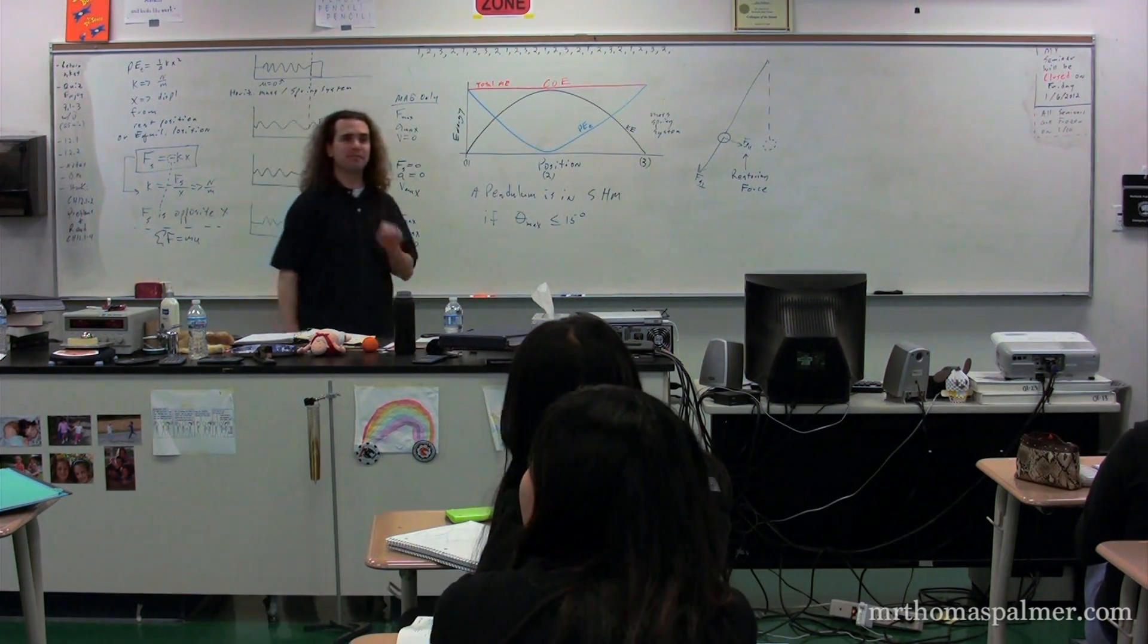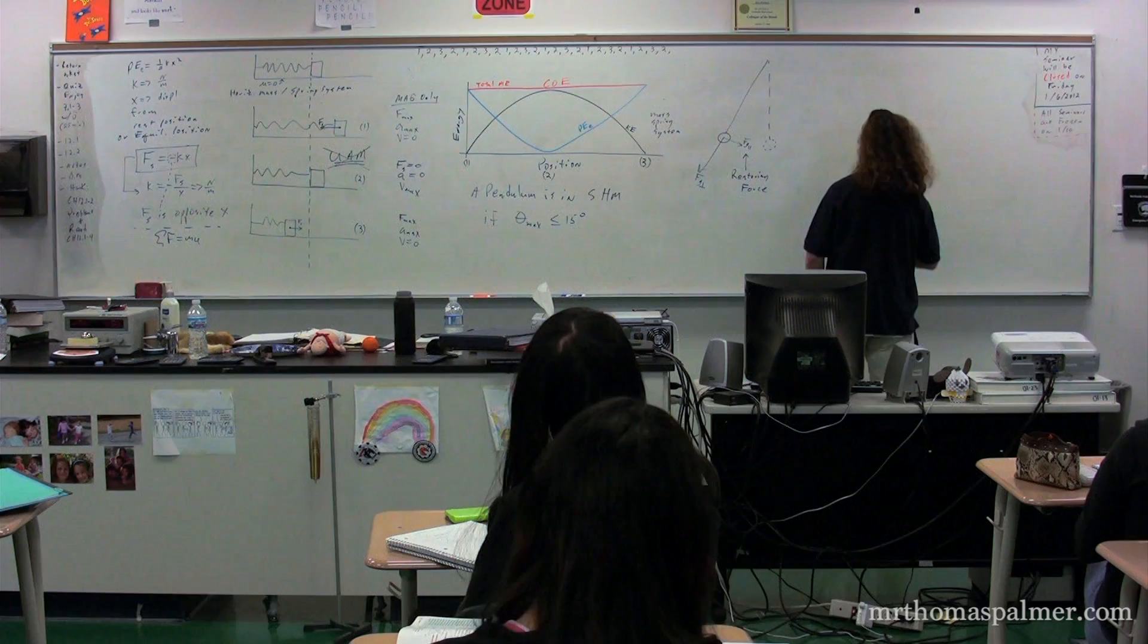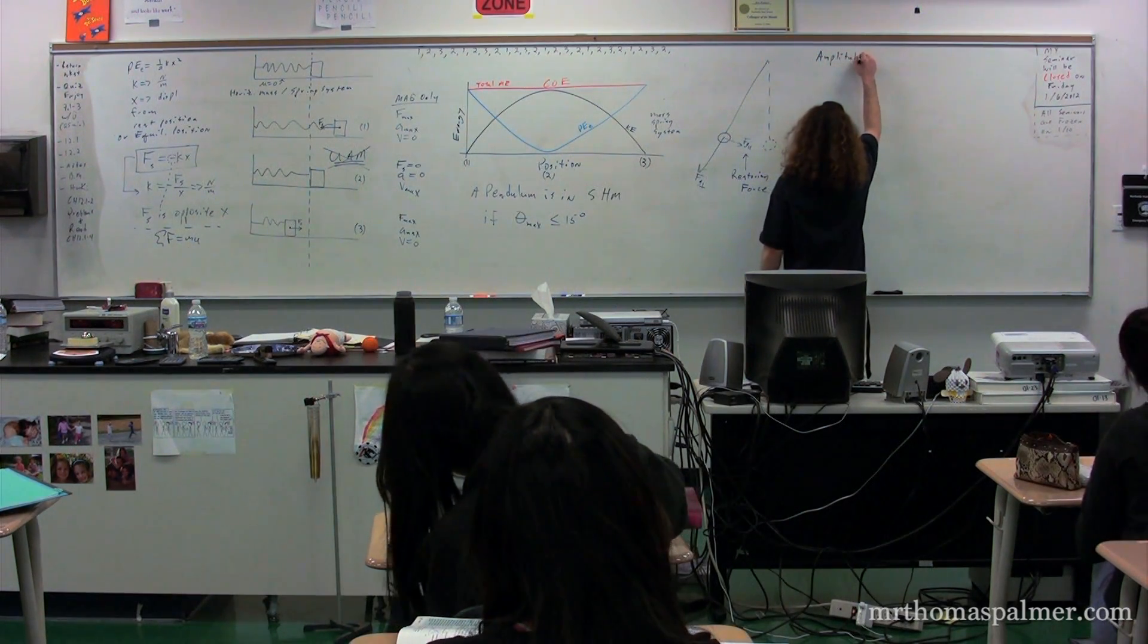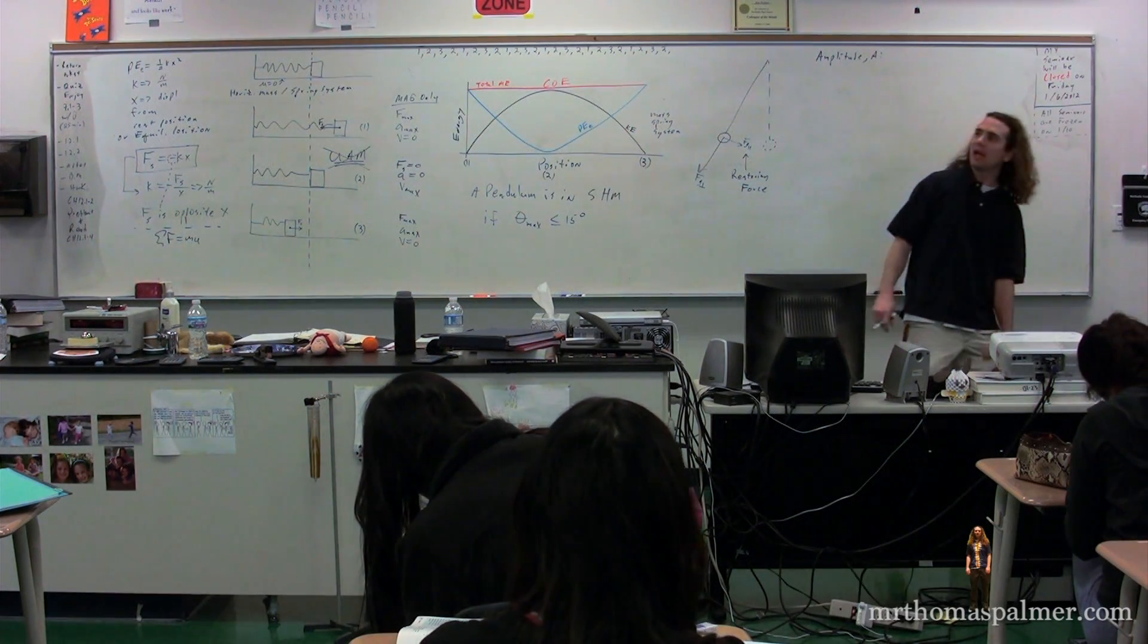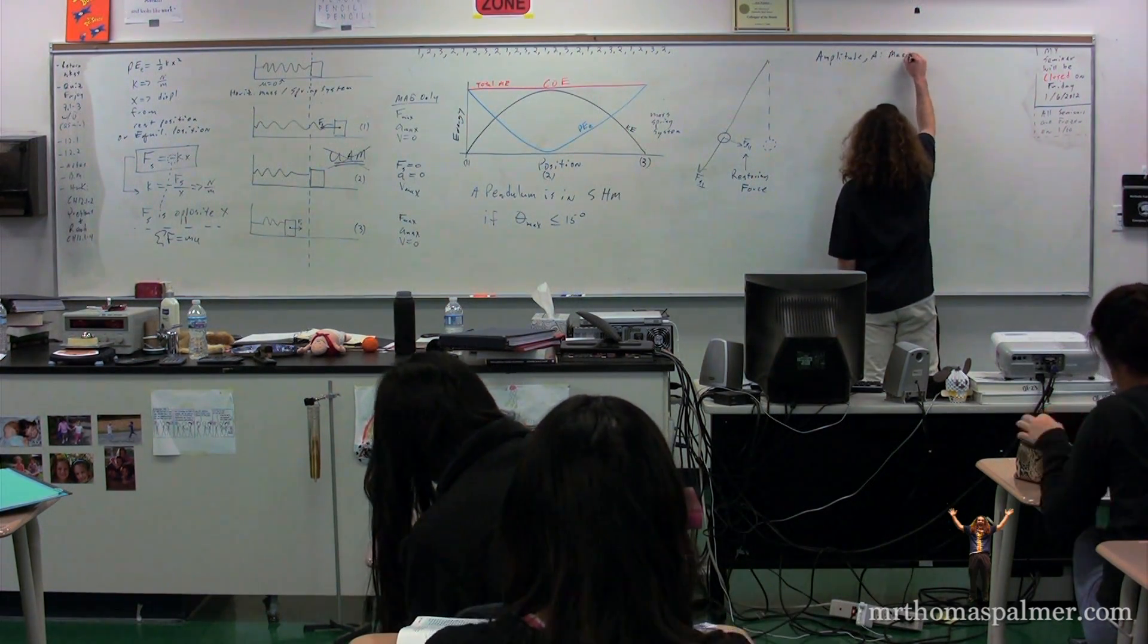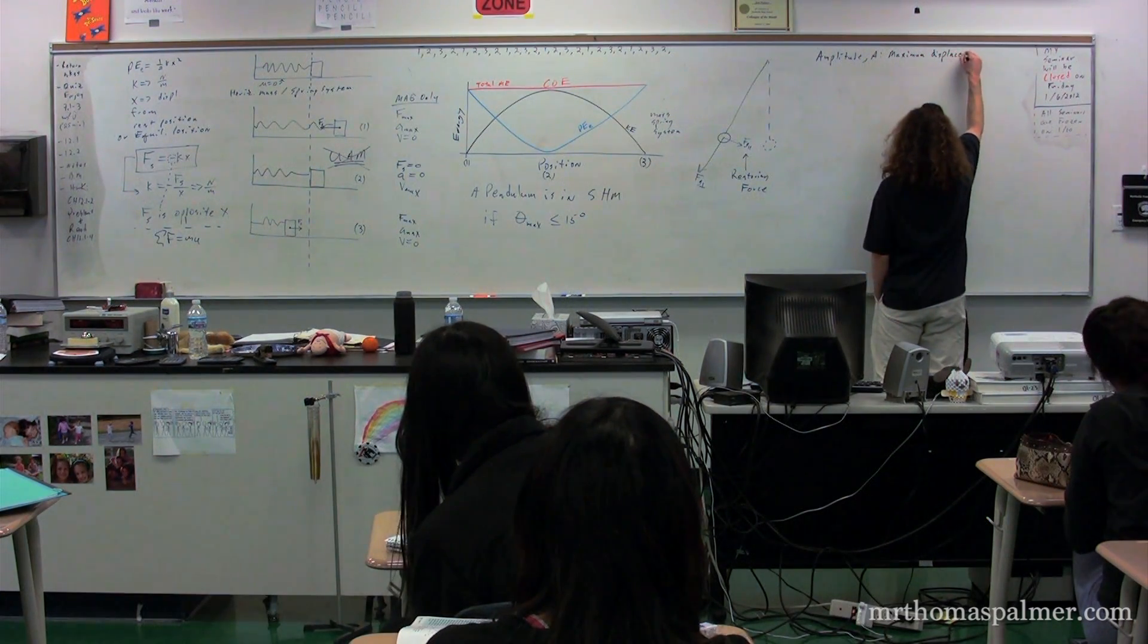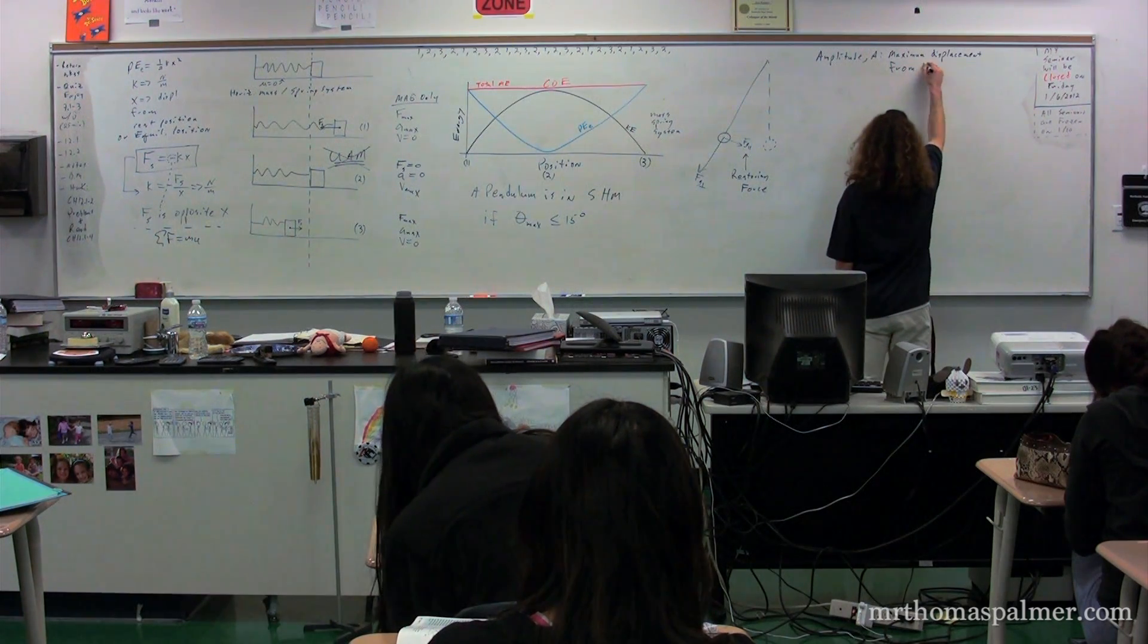Okay, I need to define three different things to make sure that you understand what they are. One of them is amplitude. The symbol for amplitude is A, capital A, and the definition of the amplitude is it's the maximum displacement from the equilibrium position.